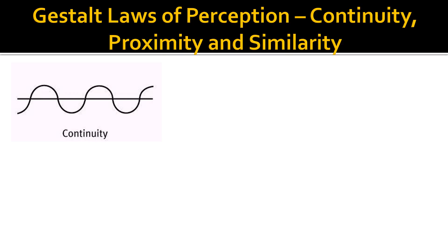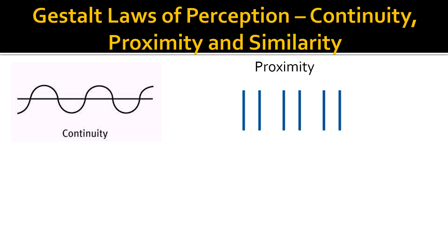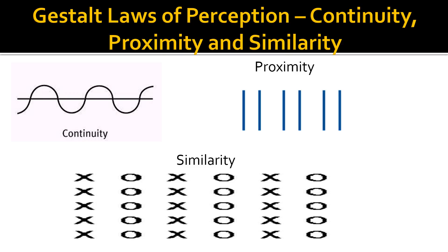This figure illustrates continuity: we tend to see the image as consisting of a straight line and a wavy line rather than as a series of semicircles. This image illustrates proximity: we are more likely to perceive it as three pairs of two vertical lines each, rather than six separate vertical lines. This figure illustrates similarity: we are likely to perceive it as alternating columns of crosses and noughts rather than as rows containing alternating crosses and noughts.